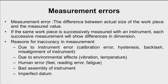Inaccuracy may also be due to environmental effects like vibration or temperature changes. It may be due to human error — sense of feel, reading error like parallax error, or fatigue of the operator. The error may also be due to bad assembly of the instrument, meaning the measuring instrument is not assembled properly and there is some slackness in the assembly of various components.